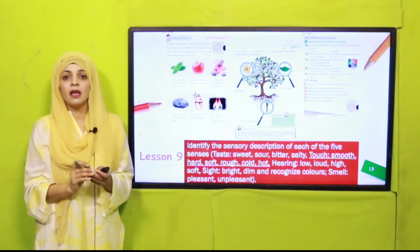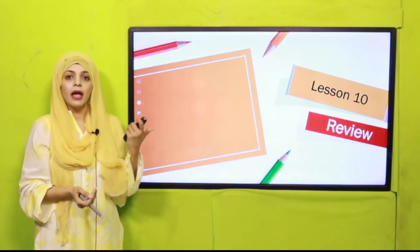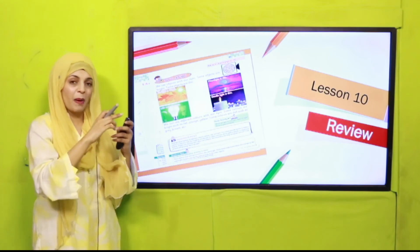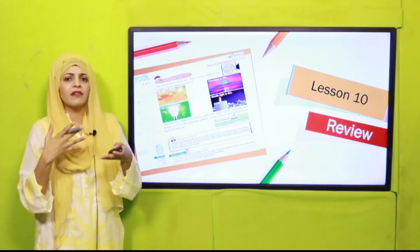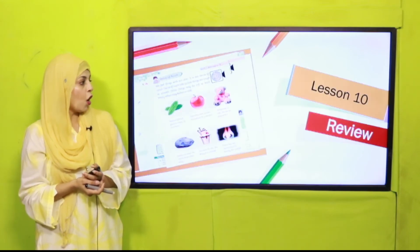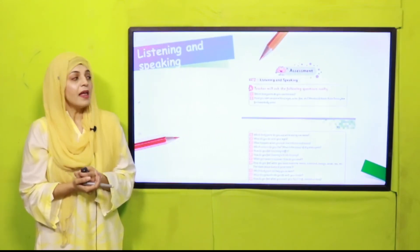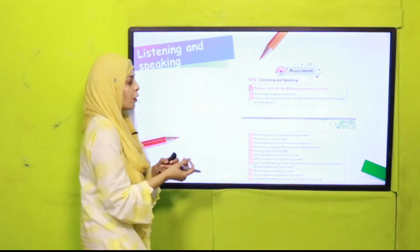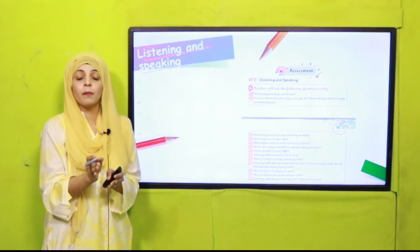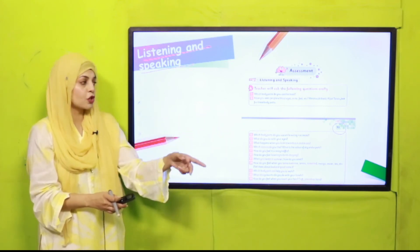Unit Number 11 will be completed with Lesson Number Ten, which is a complete review. All pages will be revised — from body parts and their functions through all five senses. An assessment will also be given in Lesson Number Ten to evaluate what students have learned. There is an assessment page on page number 92 and 93 with listening and speaking questions, which your teacher will use to evaluate you orally at the end of lessons.